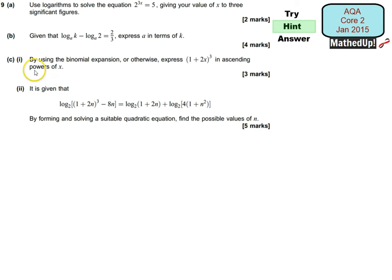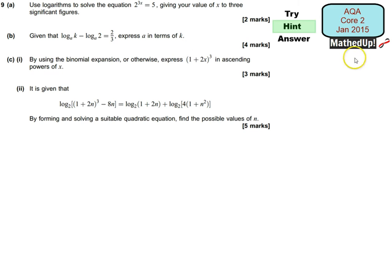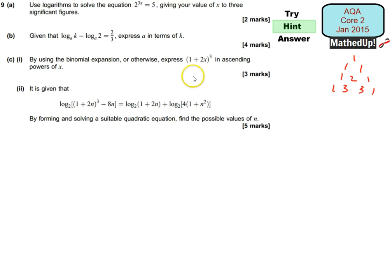Part C says use the binomial expansion to express this in ascending powers of x. You might want to use Pascal's triangle. That should tell us our coefficients, and then you want to write this in expanded form.